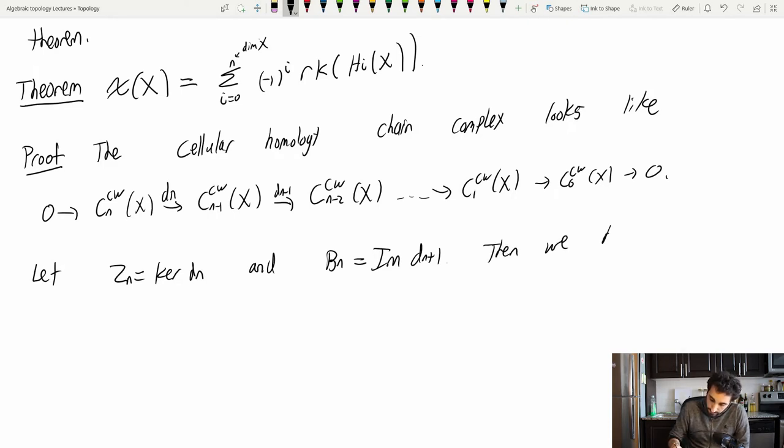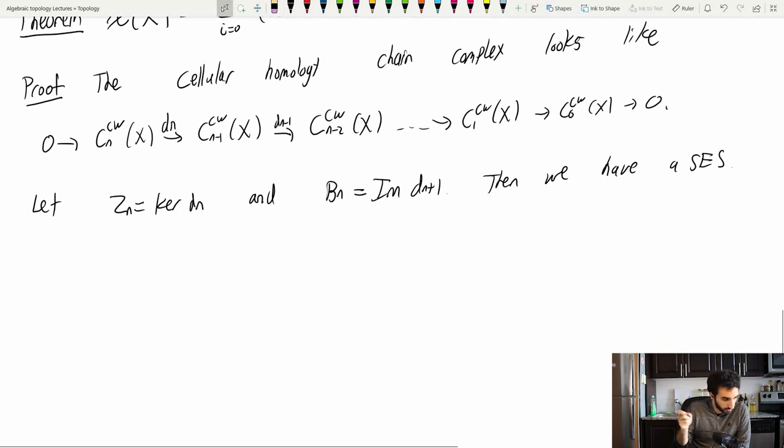All right, now then we have a short exact sequence of abelian groups, which looks like 0 to Bi to Zi, sorry, these ends have nothing to do with the dimension of the CW complex. We should call them i's. So the i-th boundary group maps into the i-th chain group, and then I can take the quotient. Zi mod Bi to 0.